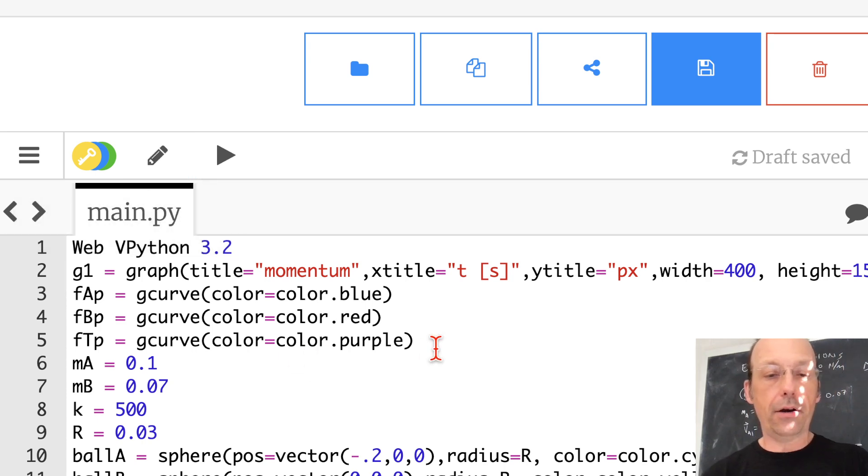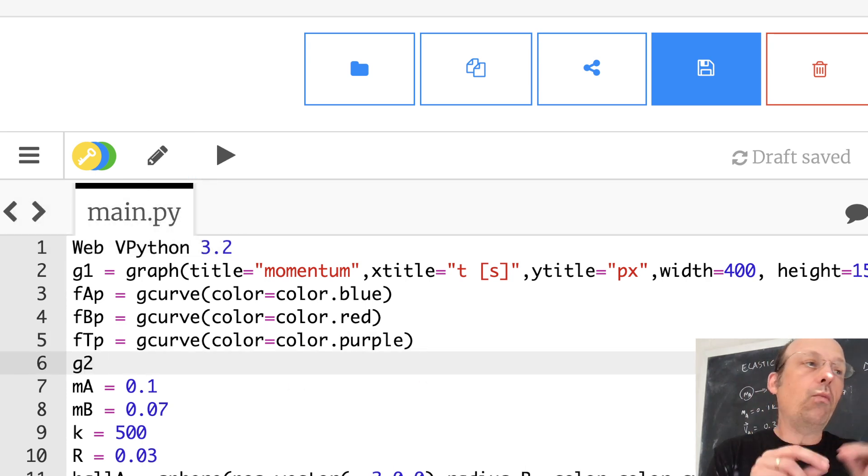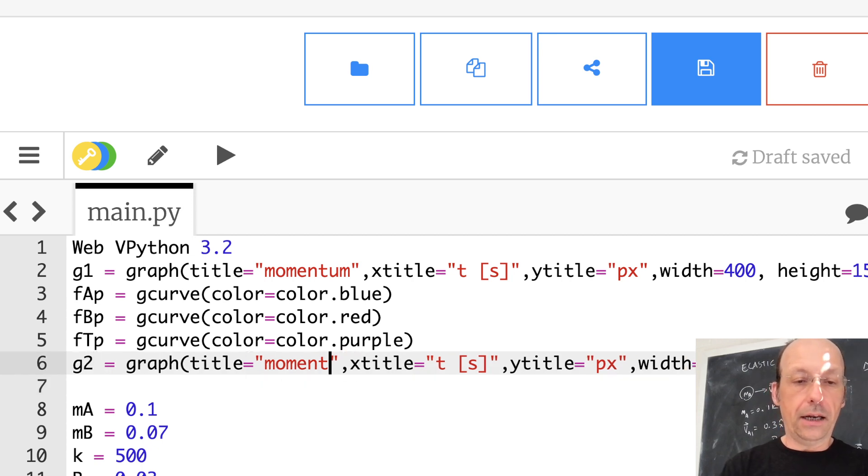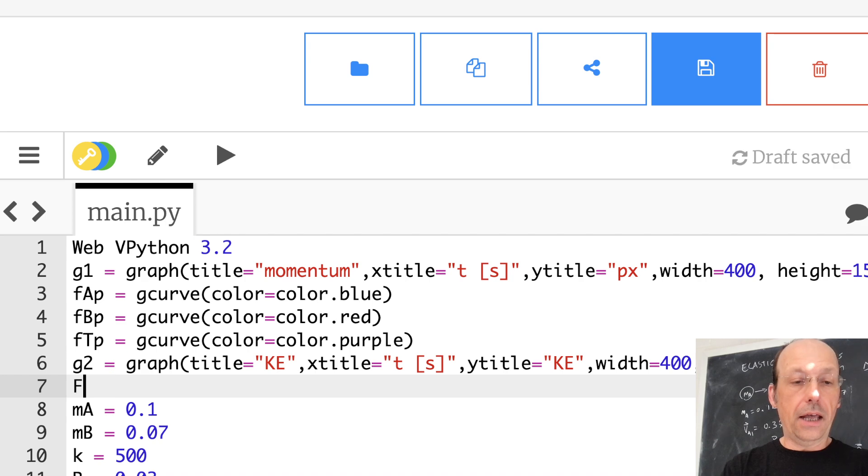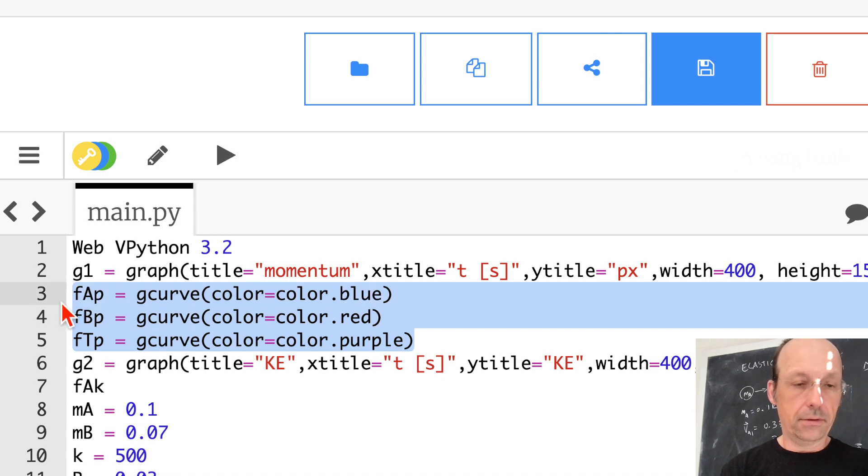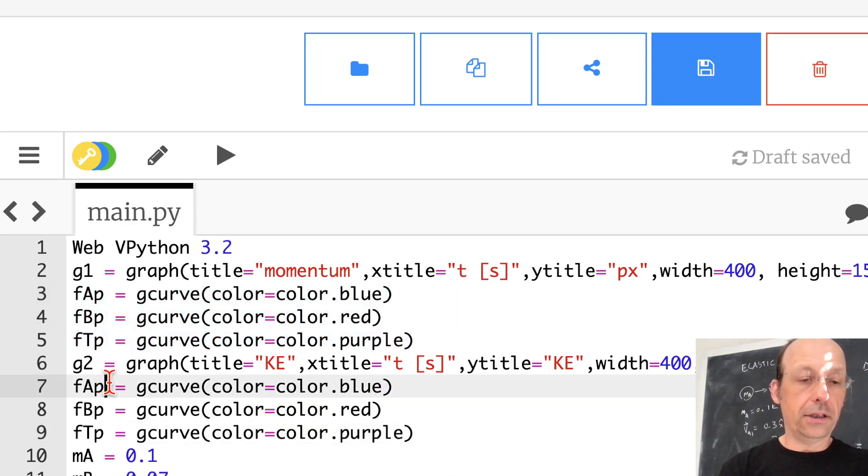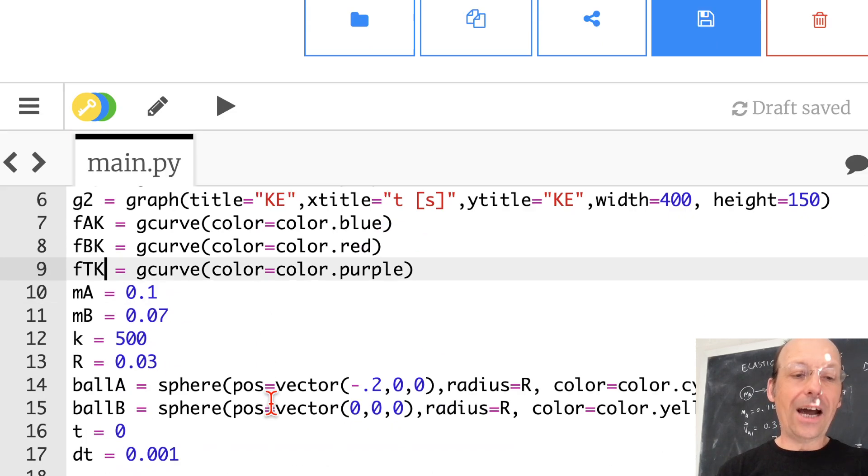We have a little bit more work here. So let's say G 2. So in Web VPython, you can make multiple graphs. And you can assign which curves go to which graphs. But if you put them in order, it works. So I'm just going to copy this just to make things a little bit easier. And I'm going to call that G 2. And I'm going to call that kinetic energy. And this is going to be KE. Now KE is a scalar, so I don't have to worry about the components. And then I'm going to change this to K.